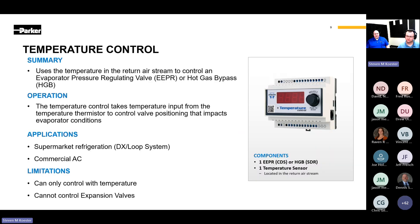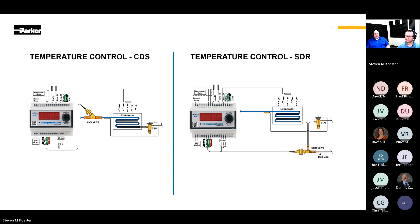Another adaptation of the Kelvin 2 is a temperature control. This Kelvin 2 uses temperature readings to control an electric valve. The valve can either be an evaporator pressure regulator or a hot gas bypass regulator. It is important to note that this Kelvin 2 only controls off of temperature. On the left is a schematic of the temperature control using the discharge air stream to position a CDS valve. On the right, the temperature control uses discharge air temp to regulate an SDR valve for hot gas bypass instead.